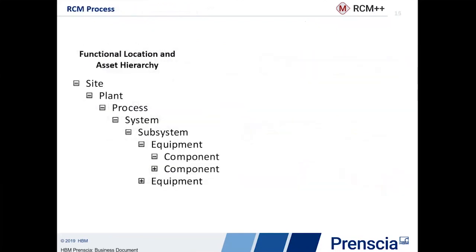We talked from the beginning about integrating this within the Maximo system, and it really starts by integrating the functional location and asset hierarchy associated with the Maximo system. So what we do is actually bring over that entire structure and synchronize it with our RCM tool, so that you don't have to do the work yourself. Understanding how failures at the component level roll up to the subsystem, system, all the way up to the process and plant has a big impact in your overall strategy.